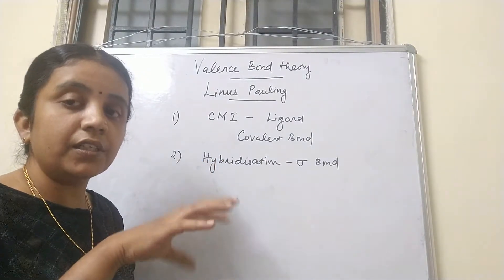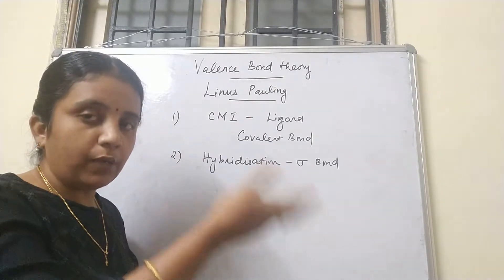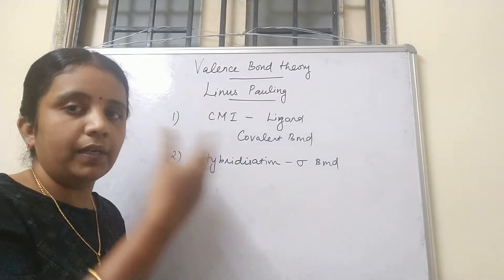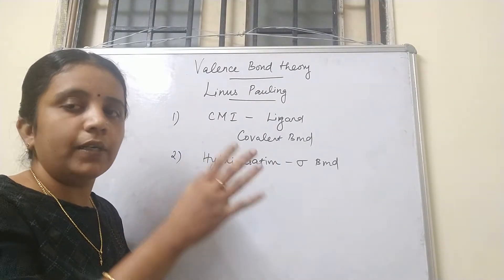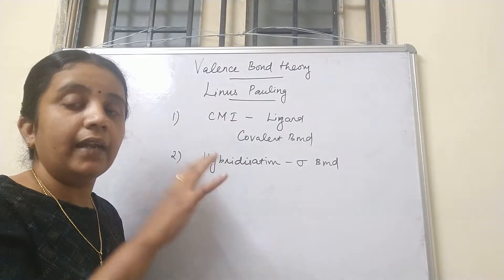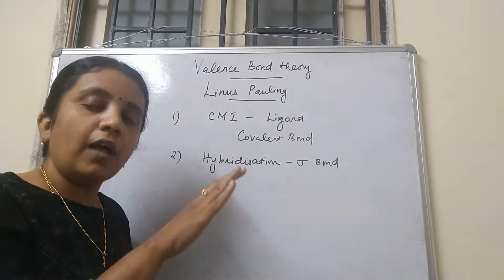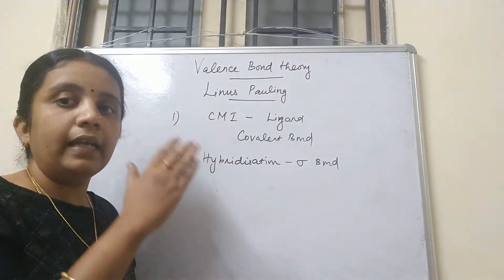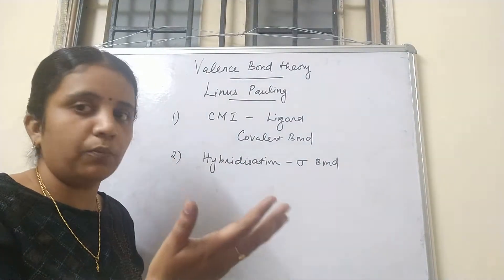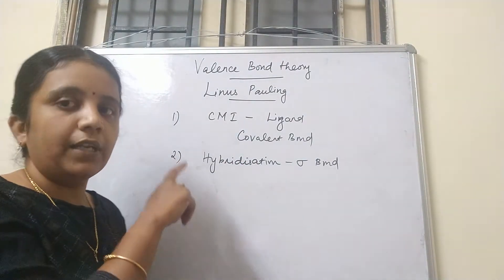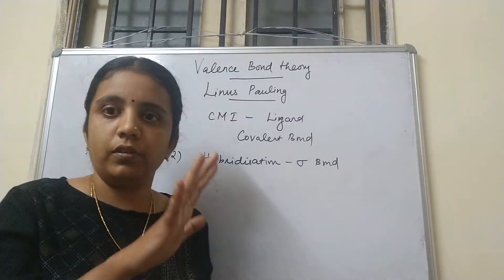After hybridization takes place, the resulting orbitals are called hybrid orbitals. The hybrid orbitals have a directional property, so they can exactly predict the geometry of the complex. The number and type of hybrid orbitals point directly to the geometry.